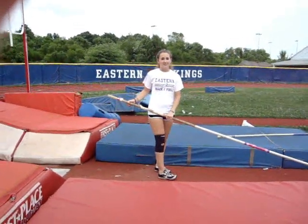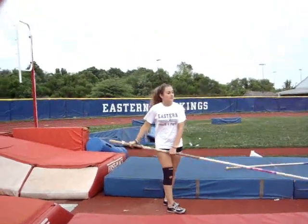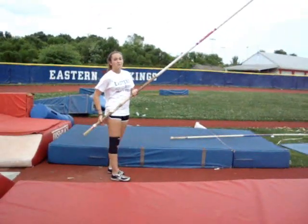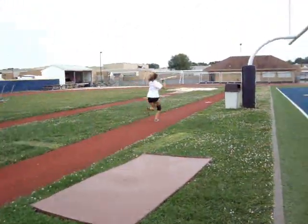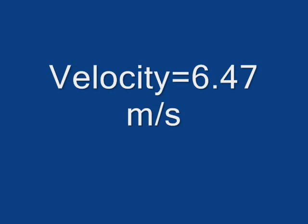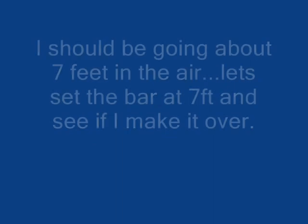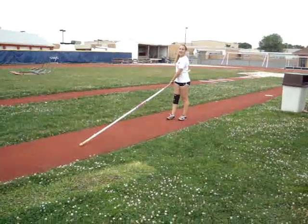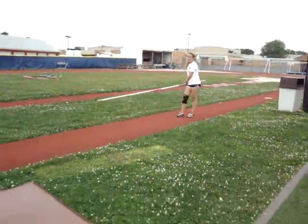In order to use the equation kinetic energy equals potential energy to figure out my height for pole vaulting, I need to find my velocity. Since I start forty-six meters away from the box for pole vaulting, calculating my time will allow me to figure out what my velocity is. We're going to see if I can get over the height that it says I should be able to get over using conservation of energy.